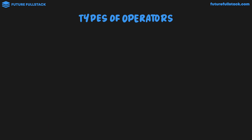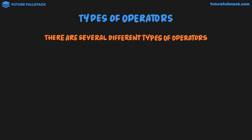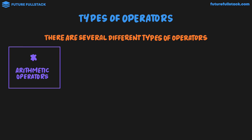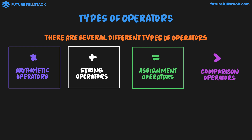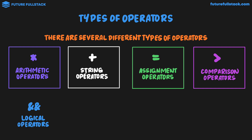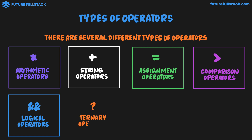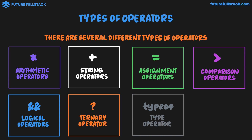Let's now take a look at the types of operators. In JavaScript, there are several different types: arithmetic operators, which we'll be looking at in this video; string operators, which allow us to modify text; assignment operators, which we've already seen and allow us to assign values to variables; comparison operators, essential for control flow; logical operators, also critical for control flow; the ternary operator; the typeof operator; and bitwise operators, which are about working with binary numbers but aren't commonly useful in everyday programming.